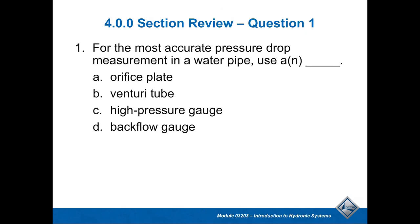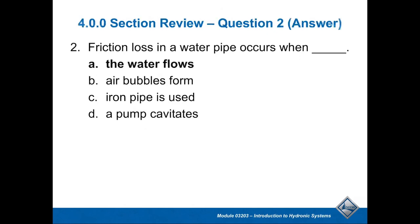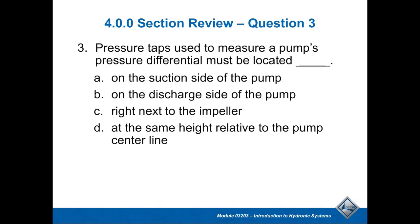For the most accurate pressure drop measurement of a water pipe, the Venturi tube makes the most sense. Friction loss in a water pipe system occurs when water flows. The pressure taps used to measure a pump's pressure differential must be located at the same height relative to the pump's centerline.